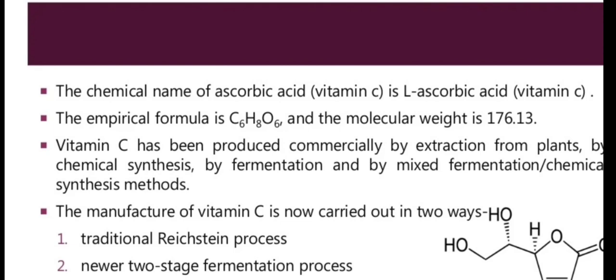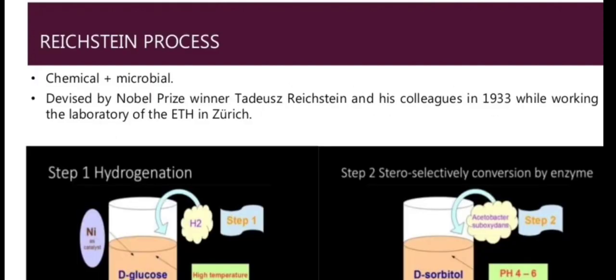When extraction from plants or fruits is used, the purity level of the product may not be sufficient. If we need a purer vitamin C product, we need to adopt the fermentation method. Let's discuss the manufacture of vitamin C in two ways: the traditional Reichstein method and the newer two-stage fermentation method. In the Reichstein method there is a combination of chemical and microbial steps. It was named after Reichstein, who received the Nobel Prize for this discovery.